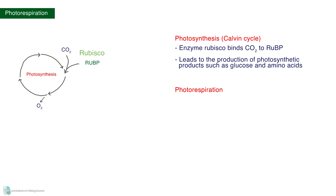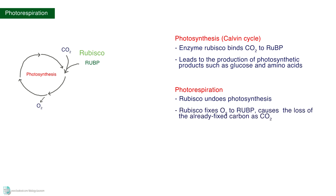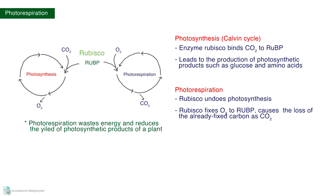Photorespiration is a process where Rubisco is undoing photosynthesis. Instead of fixing carbon, Rubisco fixes oxygen to RuBP, causing the loss of already fixed carbon as carbon dioxide. Photorespiration wastes energy and reduces the yield of photosynthetic products of a plant, so this pathway is undesirable in plants.